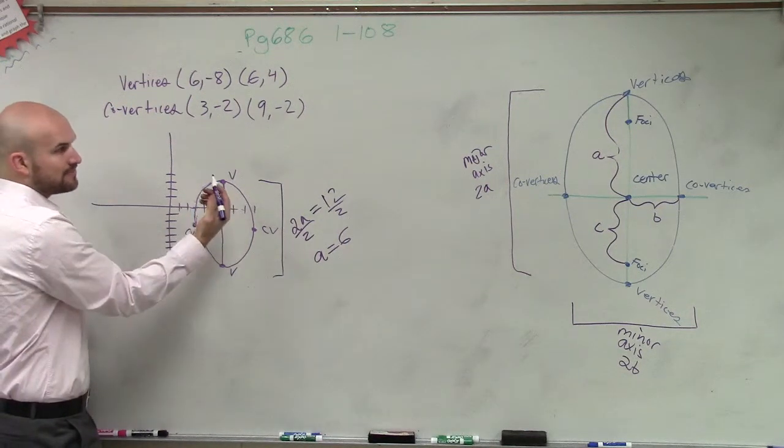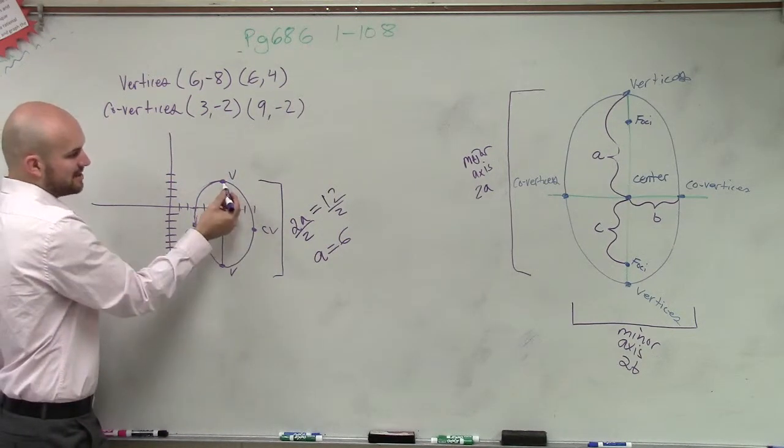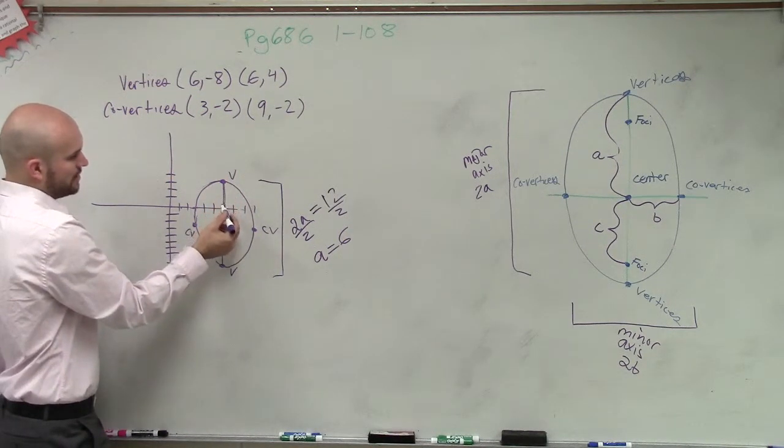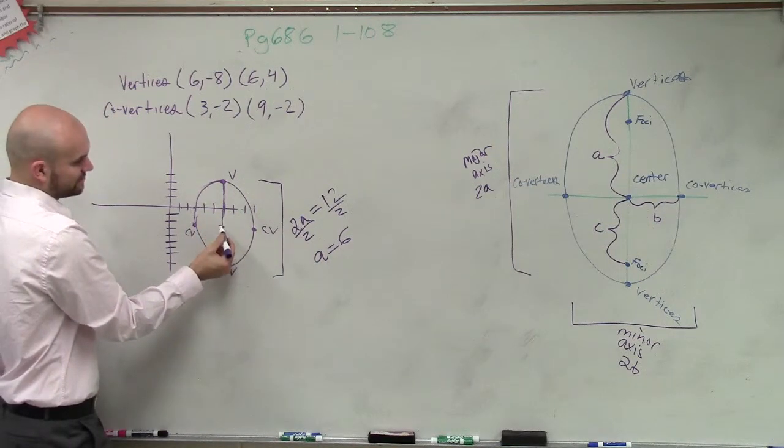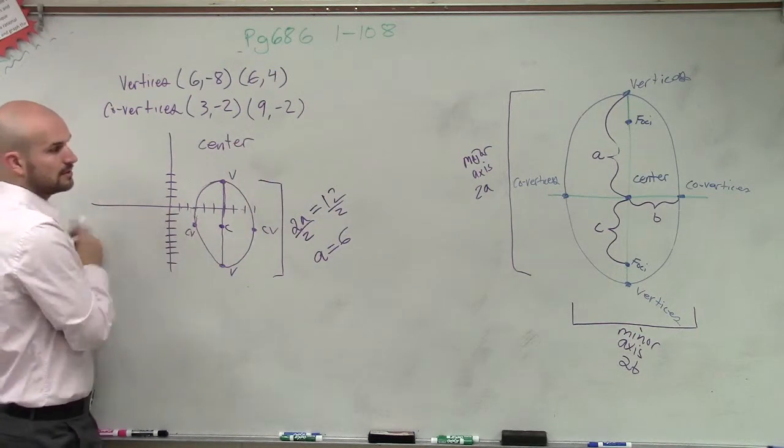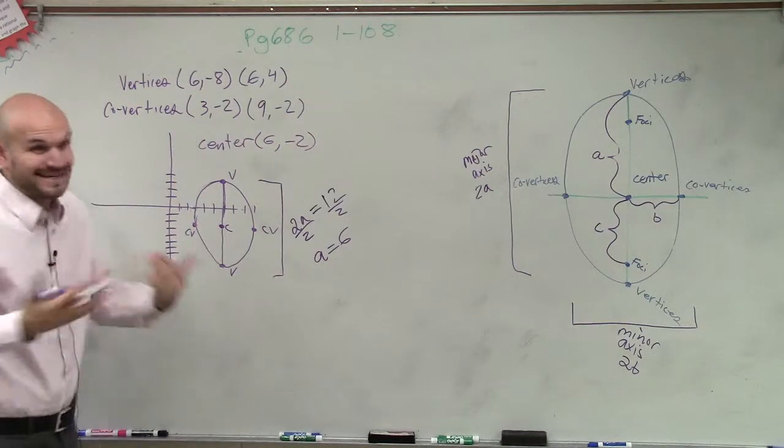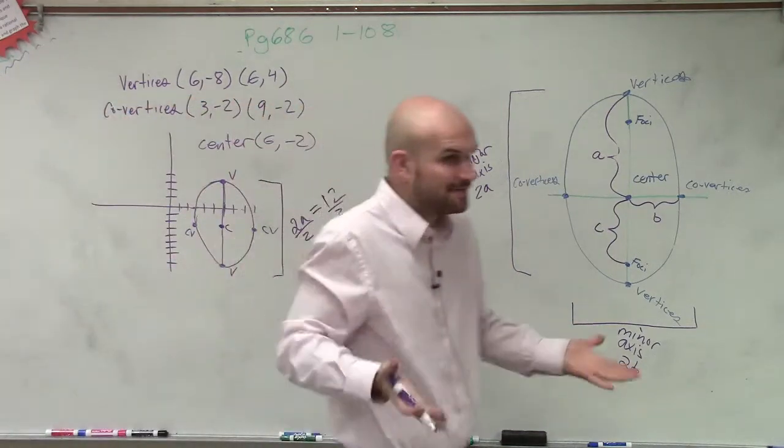So therefore, my center, we know, is on your major axis. But now it's going to be down to 1, 2, 3, 4, 5, 6. So my center is now where? (6, -2). And I need to know that to write the equation, right? You have to know what the center is.